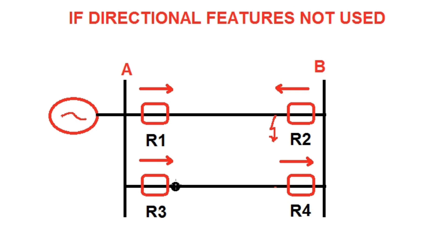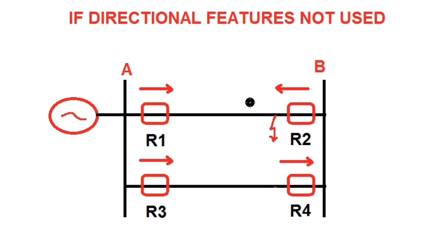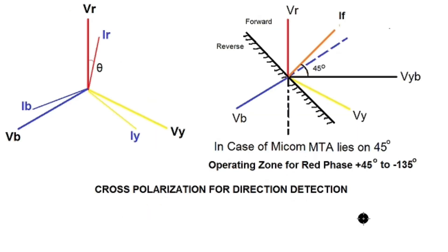Now consider another case where in between substation A and B there exists a double circuit line. The source is connected at substation A end. If a fault occurs in one circuit, only R1 and R2 should operate. However, R3 and R4 will sense the same current and, without directional features, will also operate and isolate the healthy parallel circuit from the system. So directional relay is used for lines with sources at both ends and also for parallel circuits.